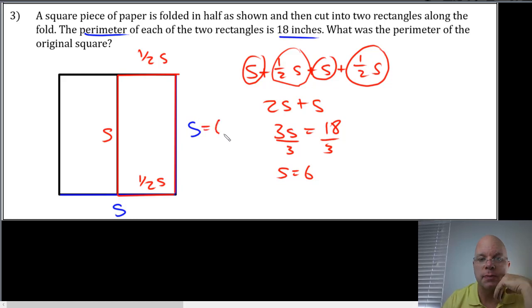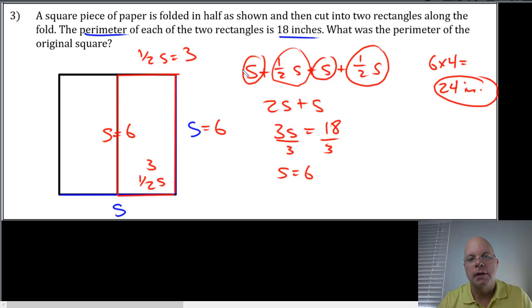So six would be the side length that would give you a perimeter of 18 on the rectangle. And so the perimeter of the original square would be six multiplied by four, which is 24 inches. The thing is, this algebraic approach may not be as accessible for everybody.